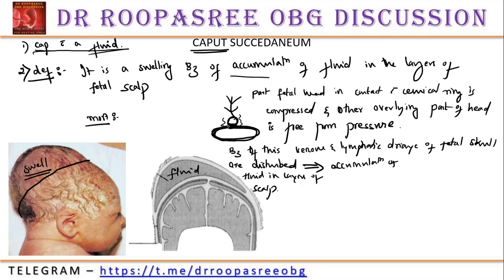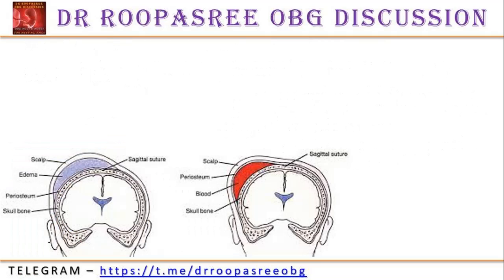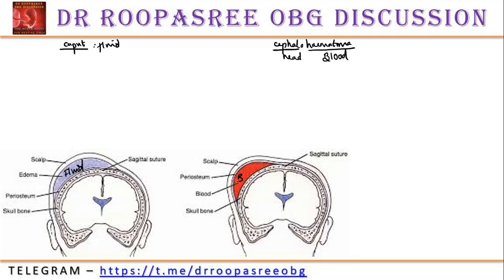The part in contact with the cervical ring is compressed and the other area is free, leading to disturbed venous and lymphatic drainage and accumulation of fluid in the layers of the scalp. Now, people confuse this with cephalohematoma. Dividing the word: cephalo means head, hematoma means blood. Cephalohematoma is because of accumulation of blood — it is due to rupture of some emissary veins in the fetal scalp.